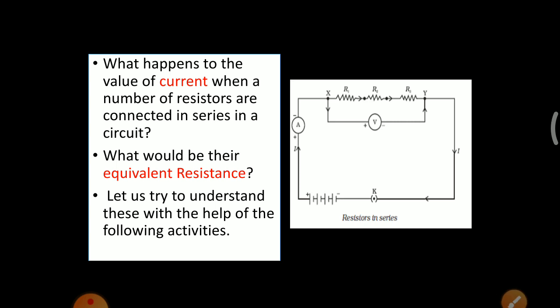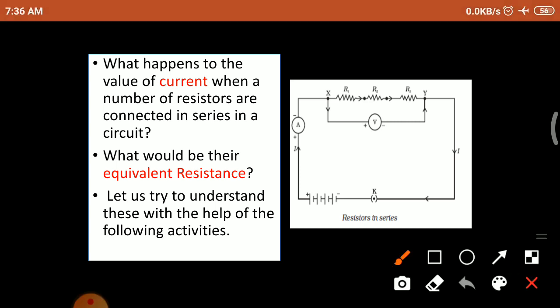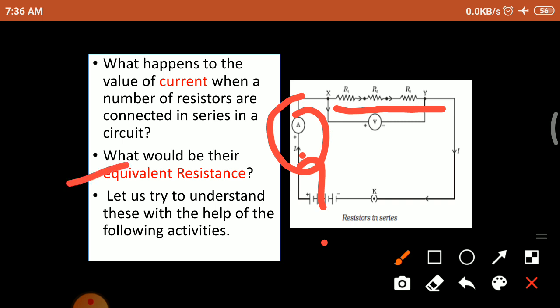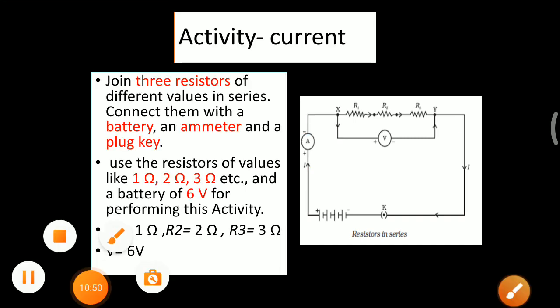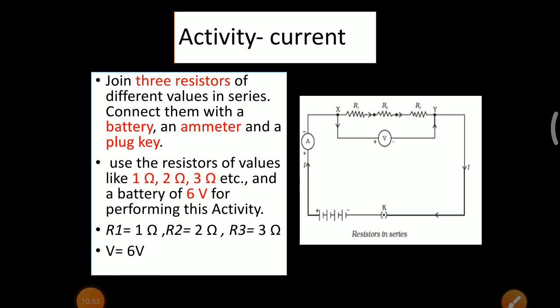What happens to the value of current when a number of resistors are connected in series in a circuit? We connect an ammeter to measure the current. What would be the equivalent resistance of these three resistors? Let us try to understand with the following activity — the current activity, where we are going to measure the current.